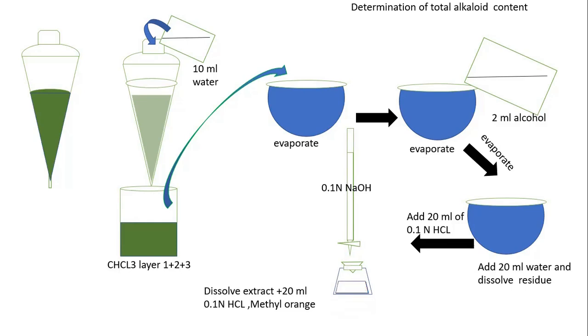In this way, the reading is obtained. Each ml of 0.1 normal HCl is equivalent to 0.3384 gram of atropine. In this way, you calculate how much quantity of atropine is present in your sample.